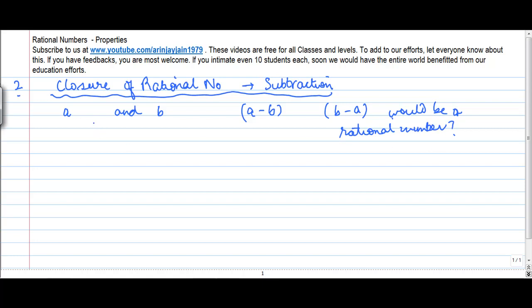So again, the examples that I took earlier, let me take 3/8 minus 2/8. The LCM will be 8. 8 goes into 8 one time, so 3 comes as it is minus 2, which equals 1/8, a rational number.